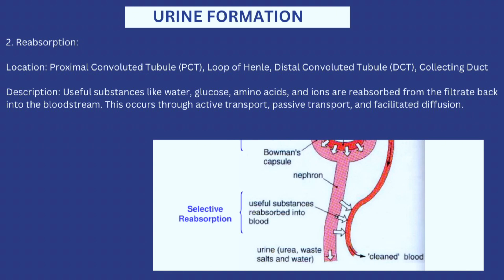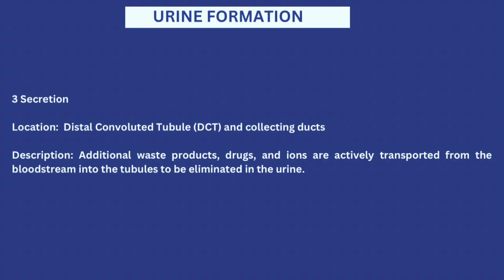The next step of urine formation is reabsorption, which happens in the proximal convoluted tubules, the loop of Henle, and the distal convoluted tubules. What happens during reabsorption is that useful substances like water, glucose, amino acids, and ions are reabsorbed from the filtrate — once the glomerulus has already filtered them, they are returned back into the bloodstream via active transport, passive transport, and facilitated diffusion.